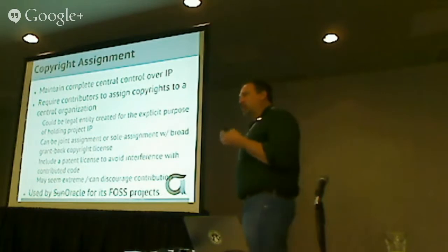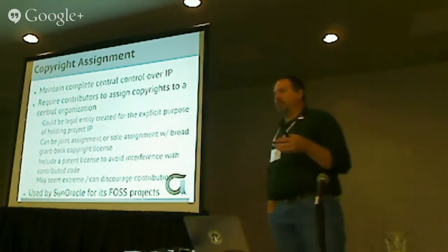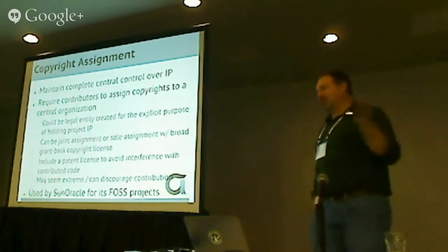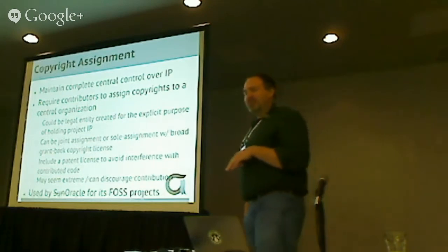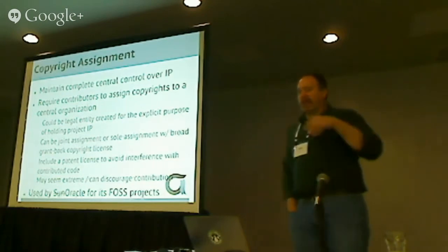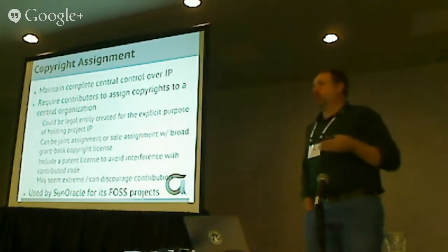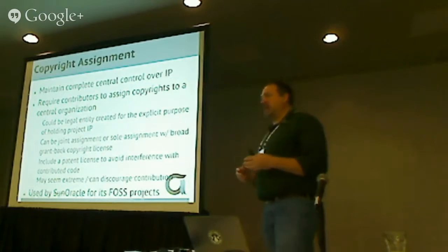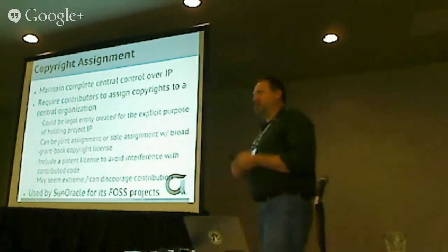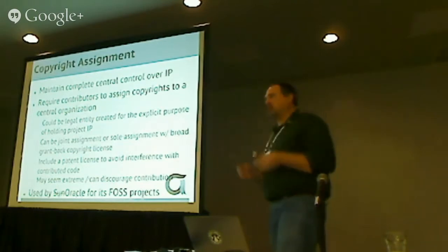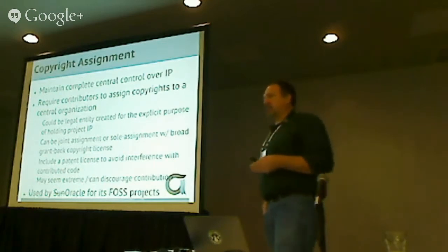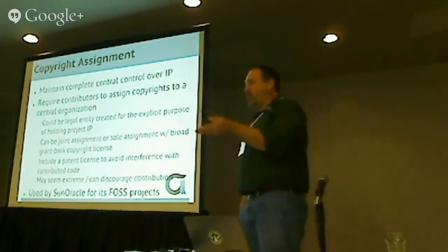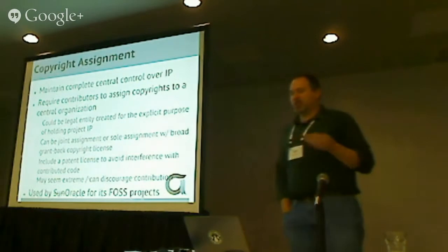There are three major ways to handle inbound licensing. The most extreme is copyright assignment, where you say anyone who contributes to this project has to sign over their copyrights — give them to us. It's your intellectual property, but we want you to give it to us. That's called copyright assignment. It allows one entity — usually a corporate entity — to maintain complete control over the IP. Sometimes it's a joint assignment where you both own it, or it might be a transfer where you get a really broad license back that says we technically own it but you're allowed to use your own creations for whatever you want.